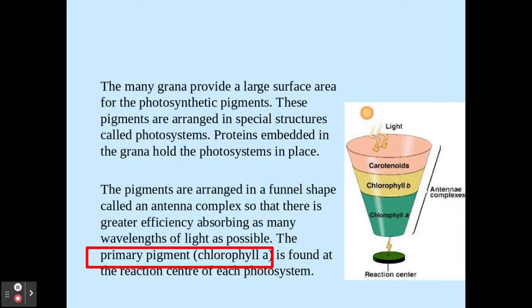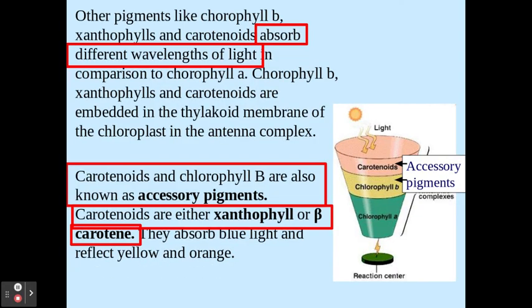Anything in a red box is the important stuff you need to know from the mark schemes. As well as chlorophyll A, which is the primary pigment within the reaction centre, we have other pigments involved. The whole idea behind having these other pigments is so that they can absorb different wavelengths of light from each other. These are called accessory pigments, and the examples you need to be aware of are carotenoids, chlorophyll B, xanthrophyll, and beta-carotene. Xanthrophyll and beta-carotene are examples of carotenoids, but you get marks for any of them.